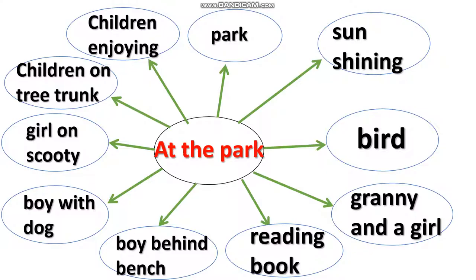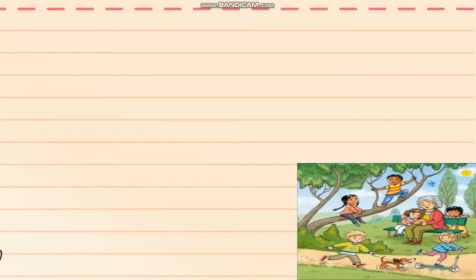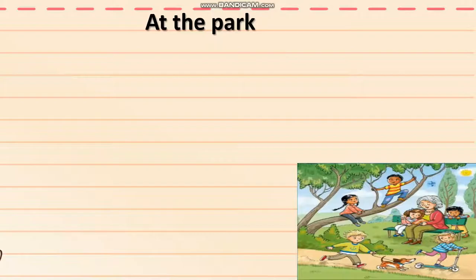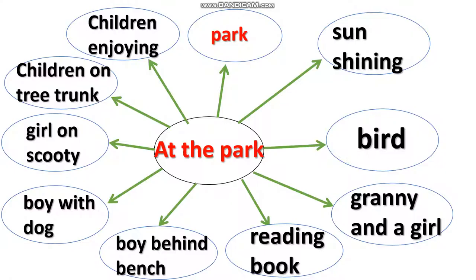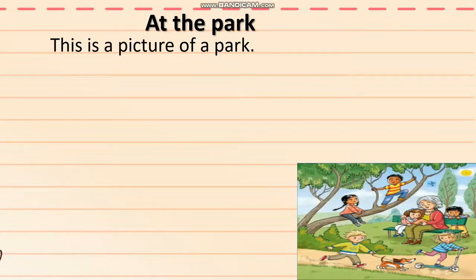Our word web is ready. Let us now start with our picture composition. We first write the title. Our title is 'At the Park.' Remember to leave two fingers space when you start writing the picture composition. Let us now see the first point. Our first point is Park.